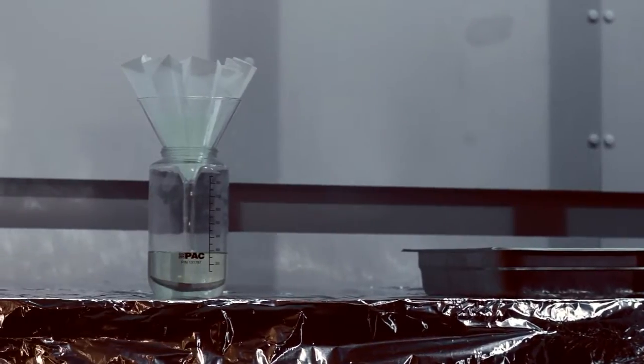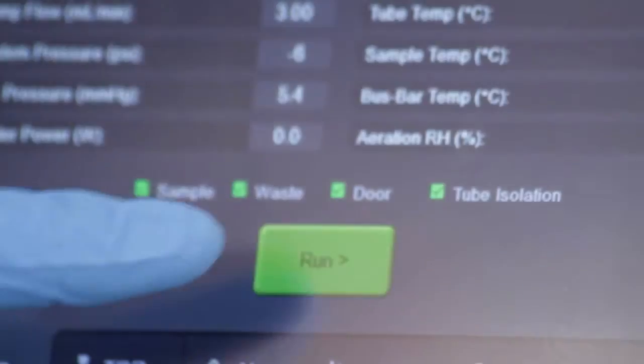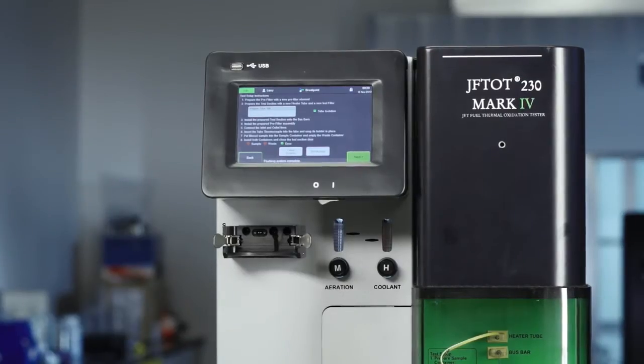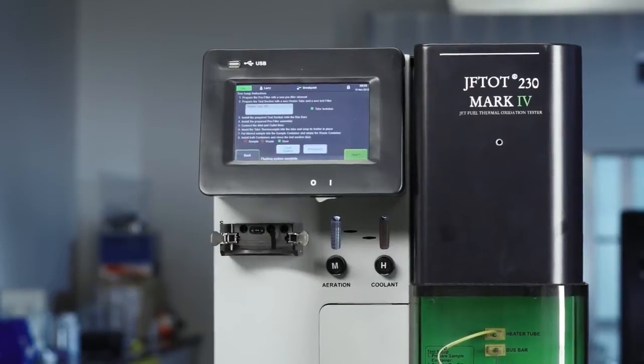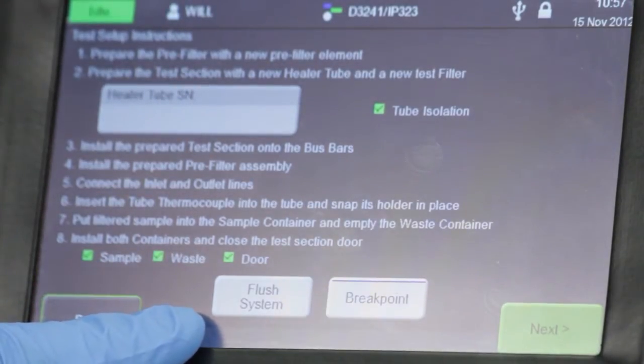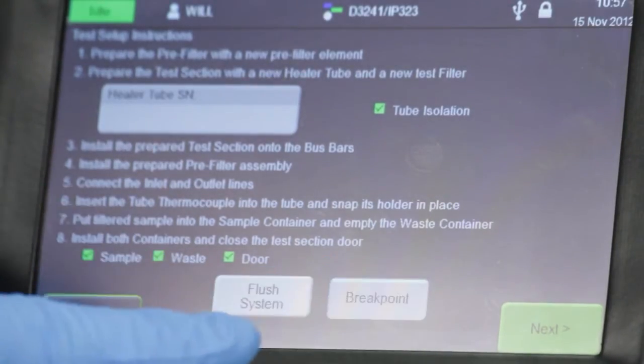While the fuel is being filtered, select Run from the home page for the Test Setup Instruction screen. This lists all the steps to assemble and install the test components to the Jephthah. You'll also see button commands on this page that allow you to manually flush the system or to start the automated breakpoint program.